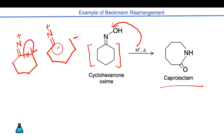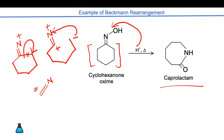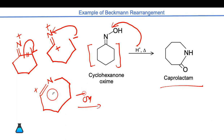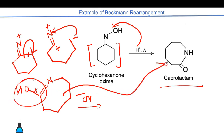The negative charge approaches the nitrogen and the ring opens, giving a seven-membered ring with a positive charge. OH⁻ from water attacks that position, giving an enol which tautomerizes to give the amide — caprolactam. This is a very good example of the Beckmann rearrangement.